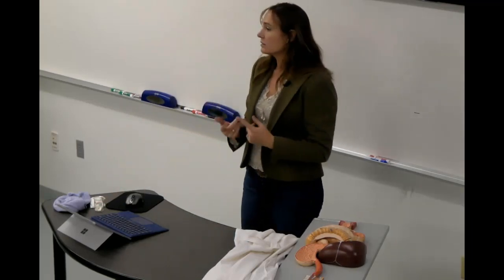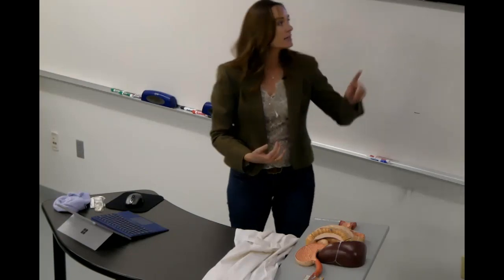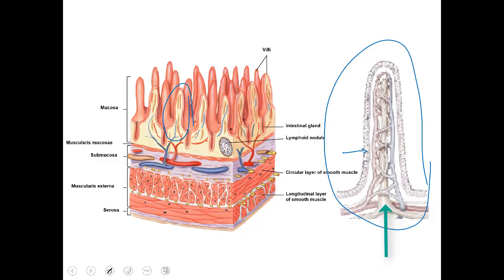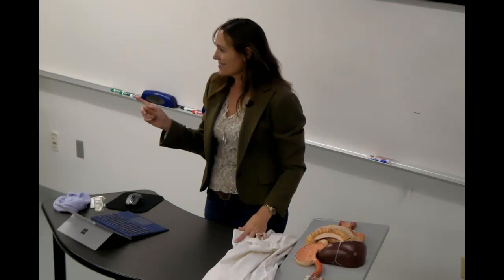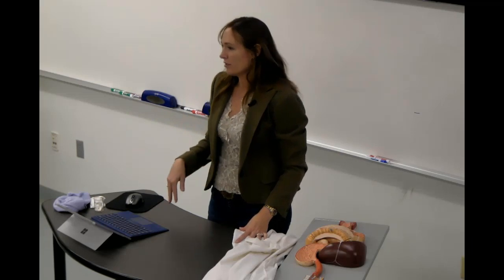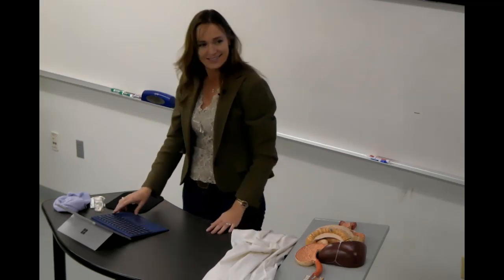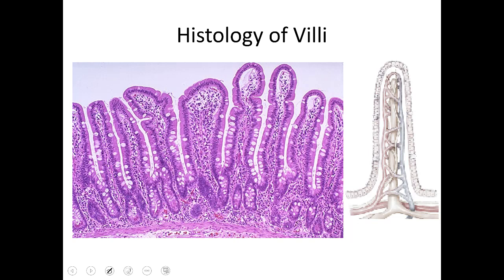Once food gets across the simple columnar epithelial cells, broken-down carbohydrates and proteins will go into the capillaries, and fats will go directly to the lacteals. We can see the lacteal right in the center portion. When blood leaves these villi — having absorbed proteins and carbohydrates — it travels toward the liver via the hepatic portal vein.